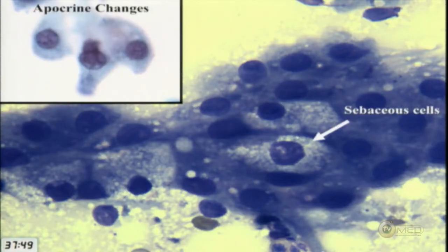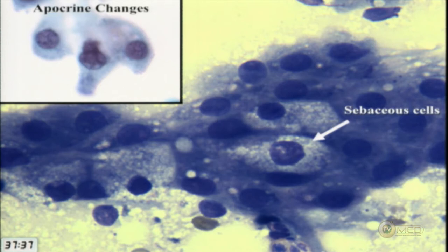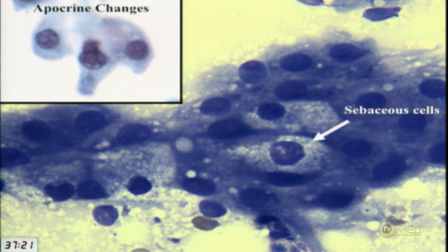Sebaceous differentiation is normal in the parotid gland — there are normal sebaceous cells there, though not many. Many tumors, including pleomorphic adenoma, can show sebaceous differentiation. To recognize sebaceous cells with ancillary studies, adipophilin and P16 are both positive, with adipophilin being the best marker to use.